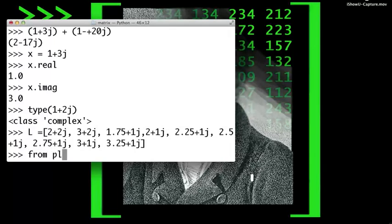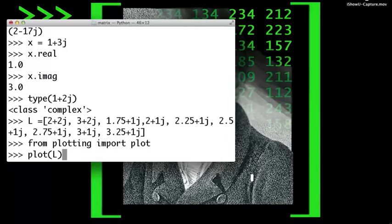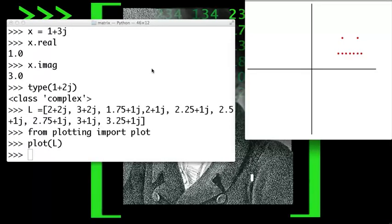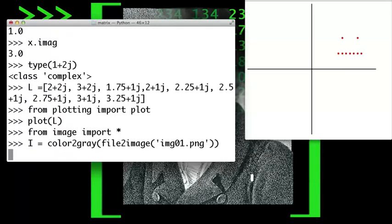I'll import a plotting procedure we provide and plot this list of numbers. Let's plot a longer list of complex numbers, one derived from an image. I'll first import some image manipulation procedures defined in a module we provide, and now load an image.